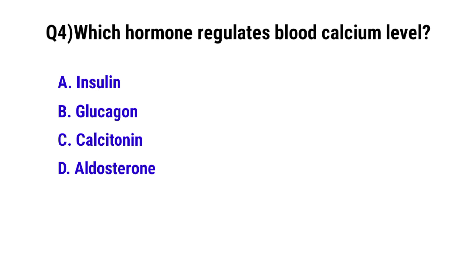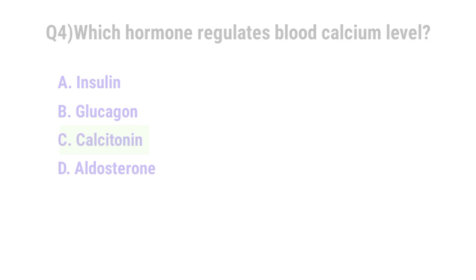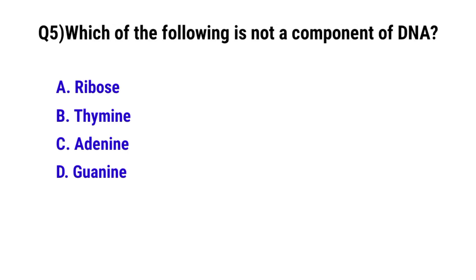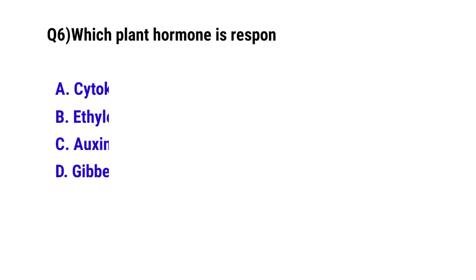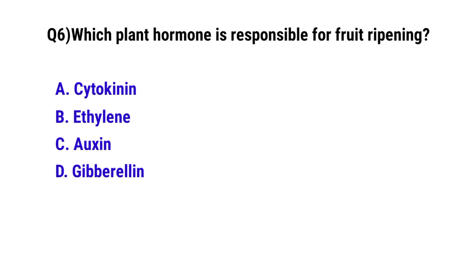Question 4: Which hormone regulates blood calcium levels? The correct option is C: calcitonin. Question 5: Which of the following is not a component of DNA? The correct option is A: ribose. Question 6: Which plant hormone is responsible for fruit ripening? The correct option is B: ethylene.